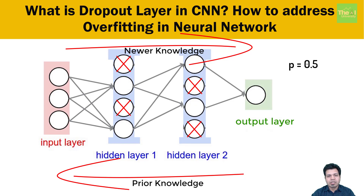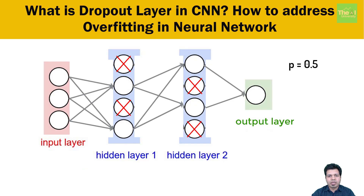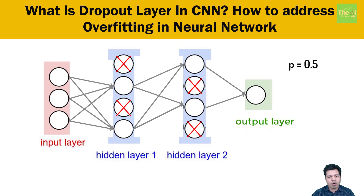All of this happens while the model is training on training data. What about test data? For the test dataset, we simply multiply the output of the layer where dropout was applied by 1-p, where p is the probability of dropout. This is applicable for any layer where we have applied dropout.